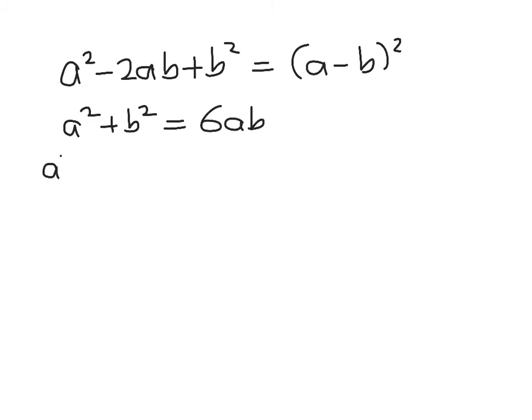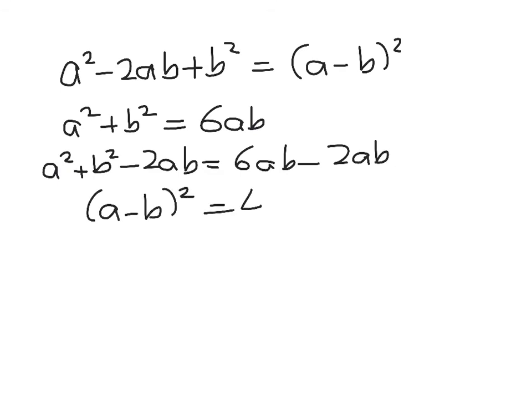I'm going to subtract 2ab from both sides. So now we have (a - b)² is equal to 4ab. So we're getting close to the end.